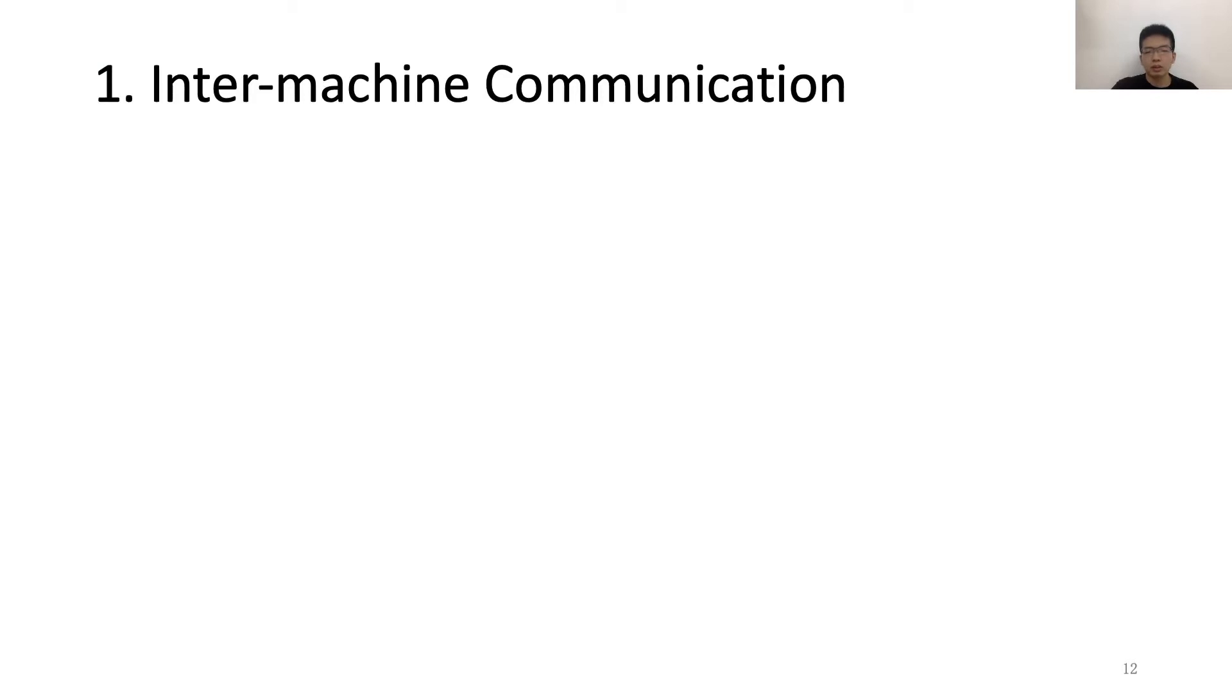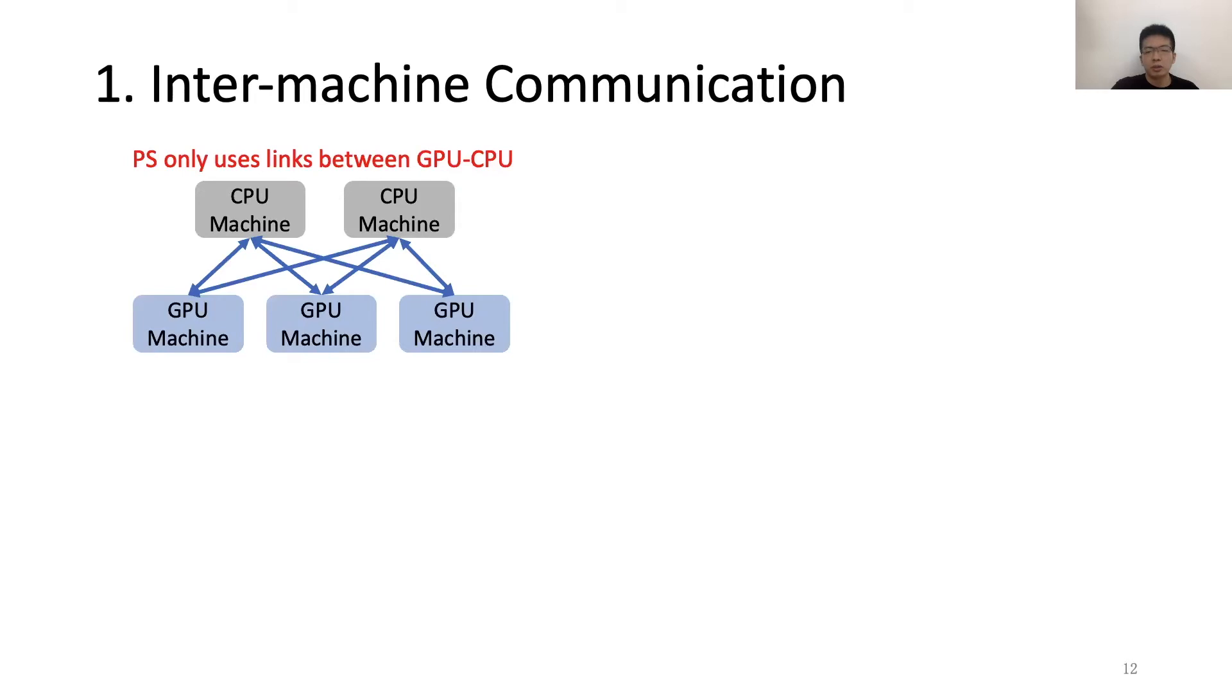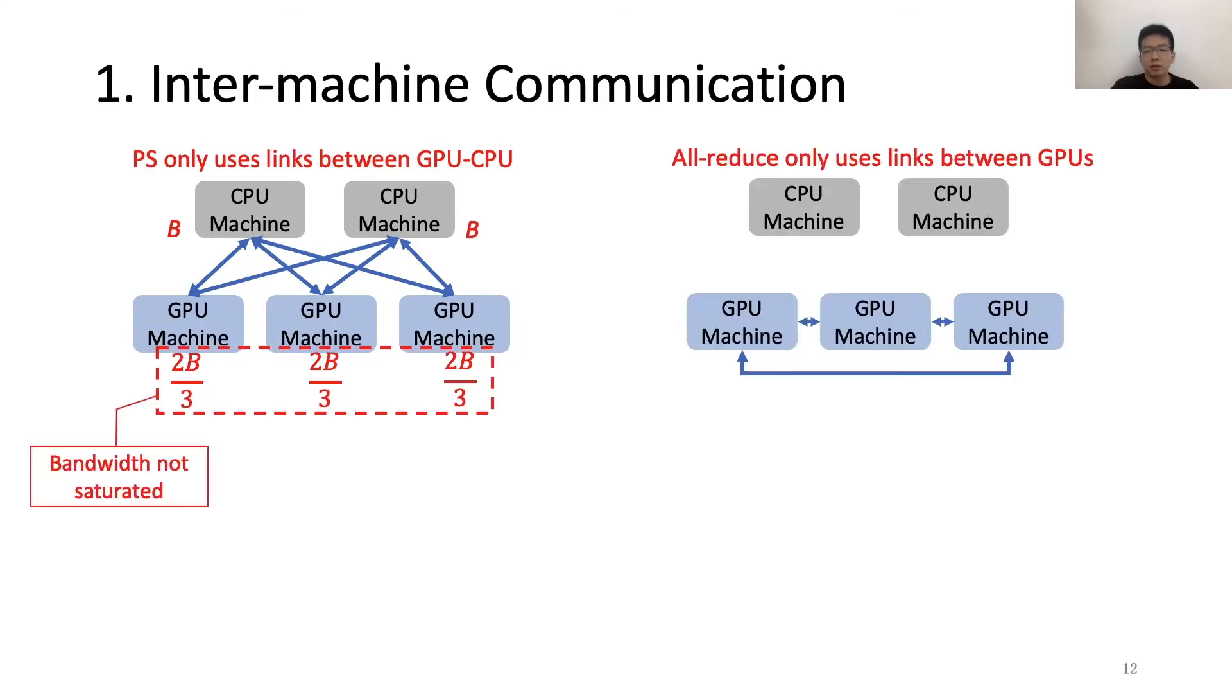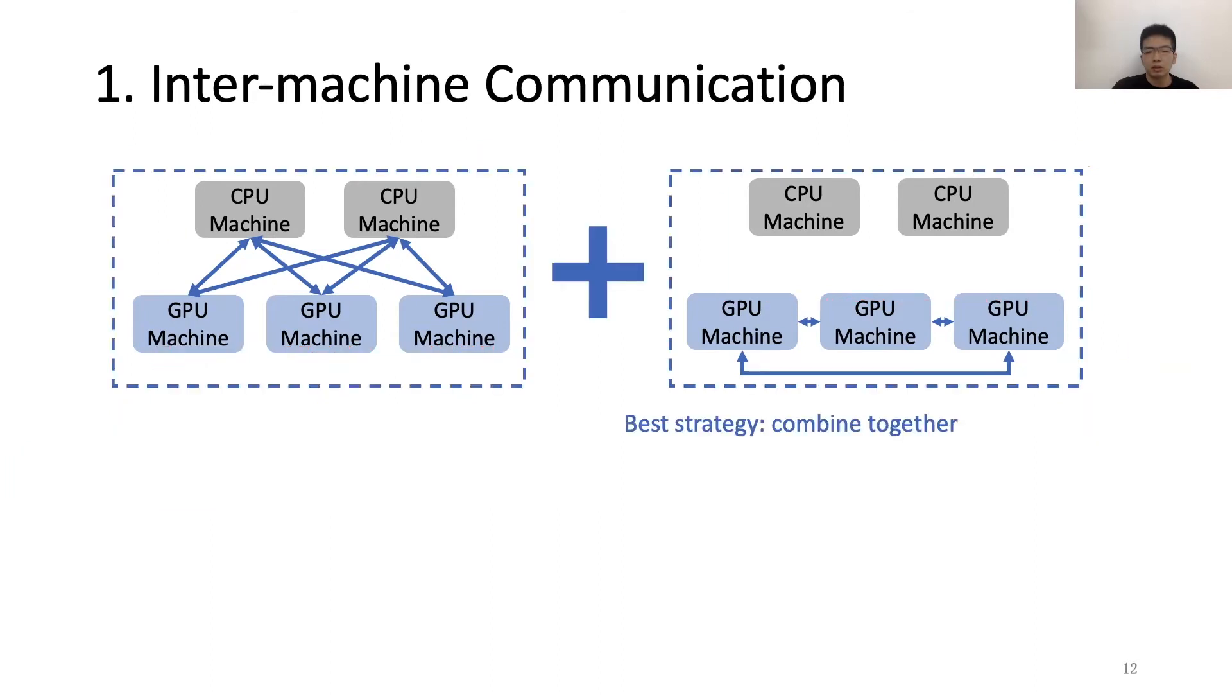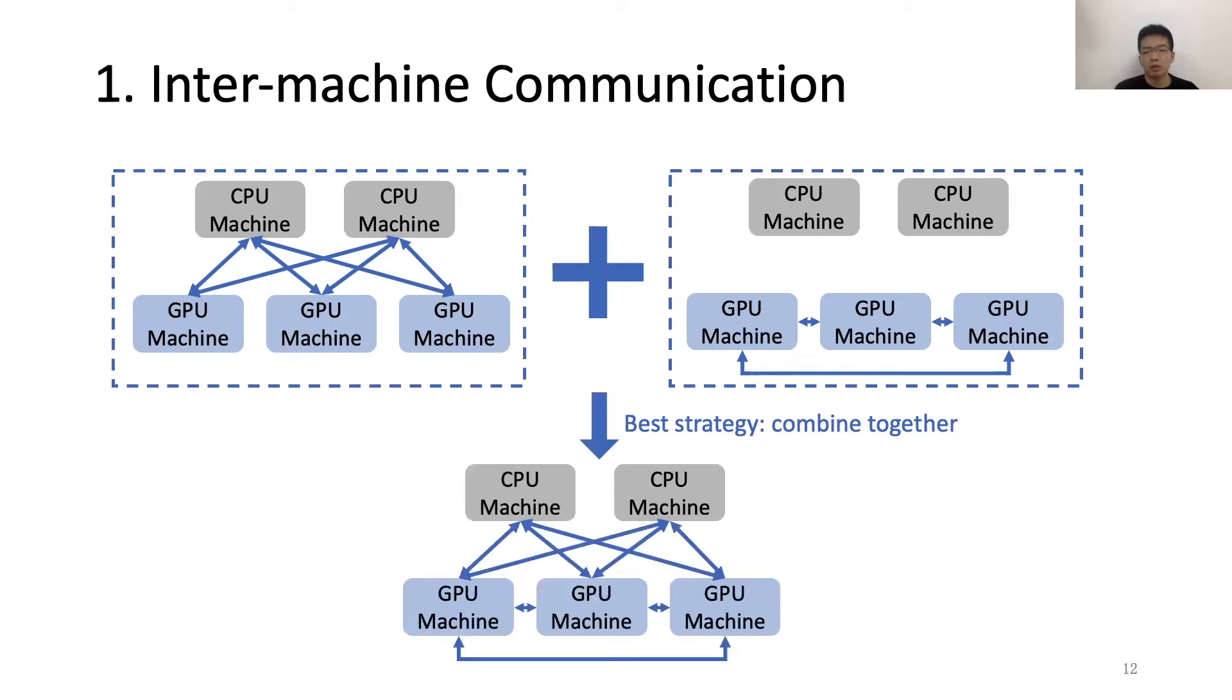Then we start from the inter-machine communication. As mentioned before, PS only uses the links between GPU and CPU machines. If there are insufficient CPU machines, then the bandwidth of GPU machines is not fully utilized. On the other hand, all-reduce only uses links between GPU machines, so the CPU bandwidth is not used at all. So the best strategy is to combine them together. That can leverage the bandwidth of all machines and also utilize the CPU resources. In this example, we not only enable the connection between GPU and CPU machines, but also enable the connection between GPU machines like all-reduce.